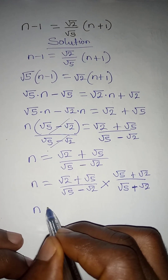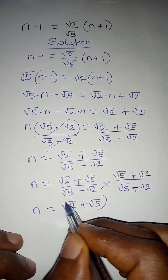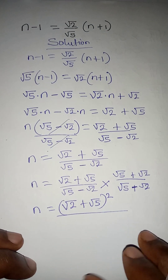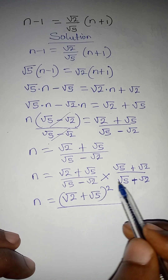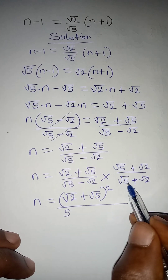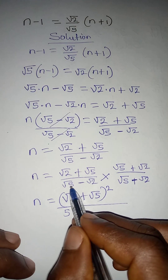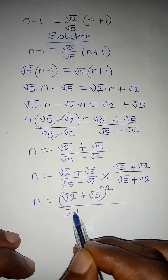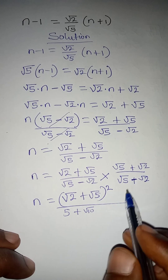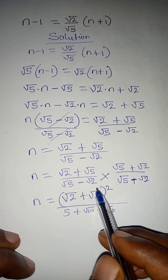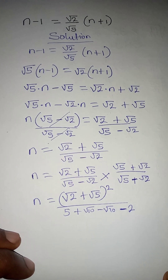This means n equals root 2 plus root 5, all squared in the numerator. For the denominator: root 5 times root 5 gives 5, root 5 times root 2 gives plus root 10, minus root 2 times root 5 gives minus root 10, and minus root 2 times root 2 gives minus 2.